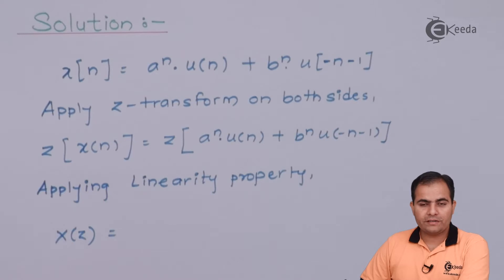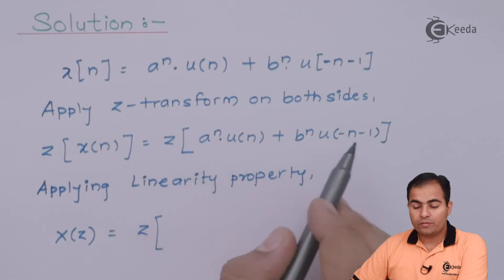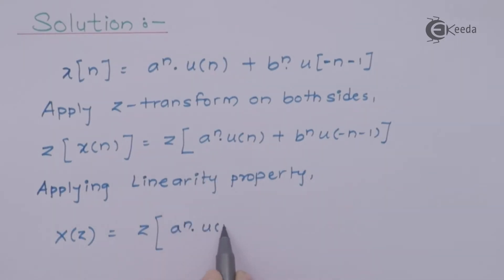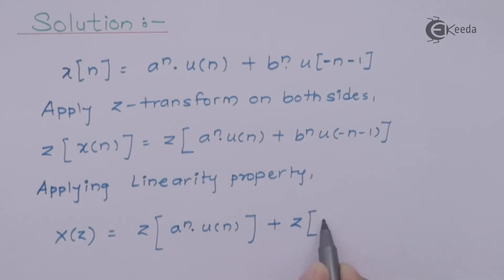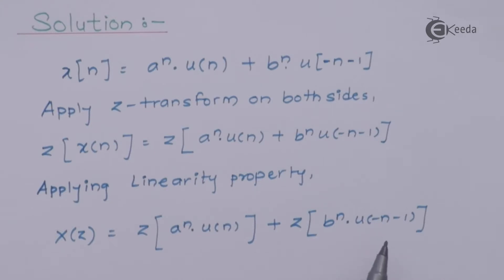So X(Z) is found by applying the Z transform separately on both parts. Before using the time scaling property, we should know the Z transform of U(n) and the Z transform of U(-n-1). We will calculate those first and then move on to applying the properties — call this equation number 1.